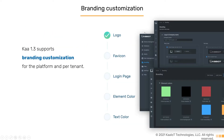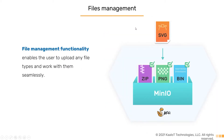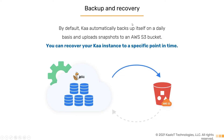The next feature is branding customization. You're now able to display your custom company logo, favicon, page background, and colors. Next is the file management feature, which allows you to store files like company logos and other branding elements in the storage system. It allows you to share, preview, download, and delete files. And finally, backup and recovery. Cot automatically performs backups of your configuration on a daily basis and uploads snapshots to an AWS S3 bucket. With these snapshots, it's possible to restore Cot to an older operational state.